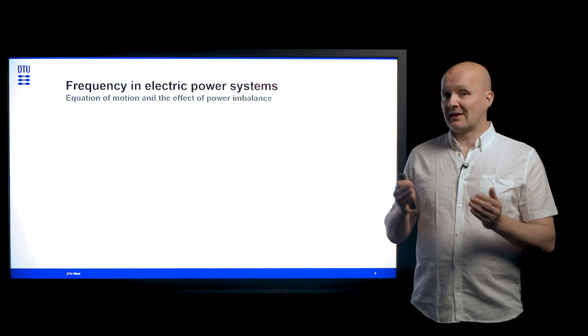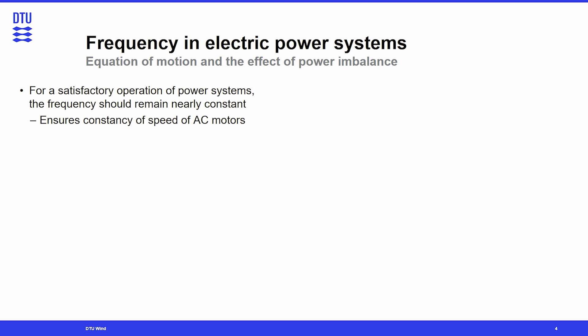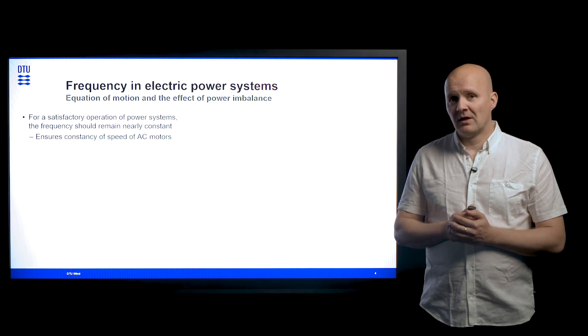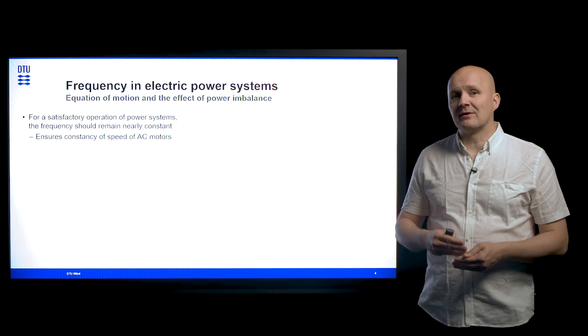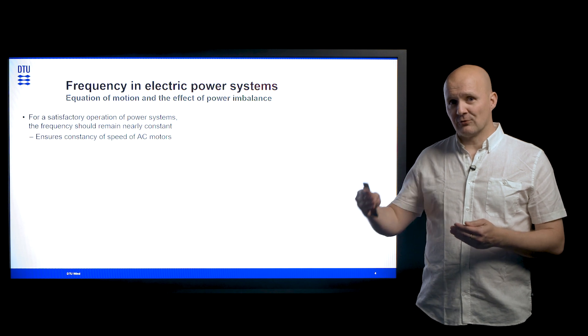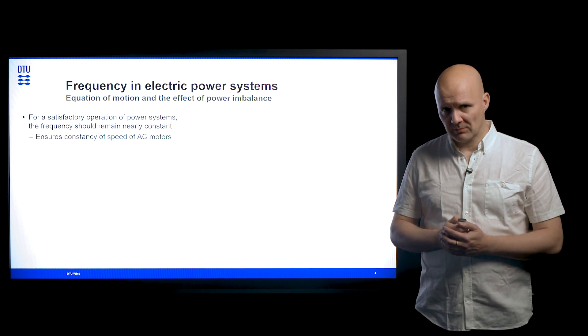If we start by taking a look at frequency in electric power systems, we are interested in that because for satisfactory operation of power systems, we need to have a frequency that is kept nearly constant. The reason for that is that this ensures that our AC motors — both asynchronous and synchronous motors — operate at constant speed. In fact, if the frequency varies too much and gets too low, we can risk that motors begin to stall, and this can lead to a cascade of outages and severe stability problems.